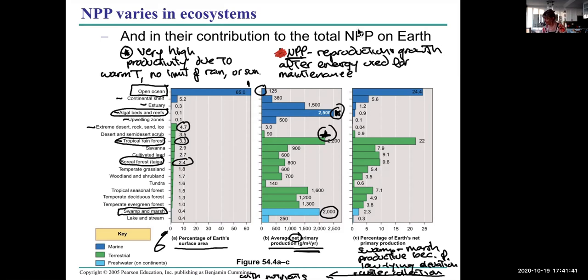Some of the lower, less productive areas: the tundra, because the growing season is not very long - per year maybe a month or so. The trees tend to be really tiny. Also low are extreme desert, rock, sand and ice, and desert and semi-desert scrub. You'd expect that to be low because there's no water. Water and temperature, precipitation and temperature, are two of the deciding factors for productivity.